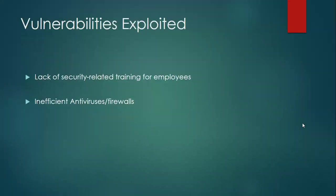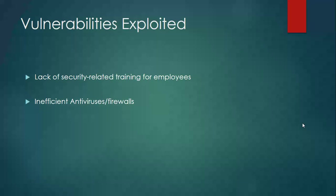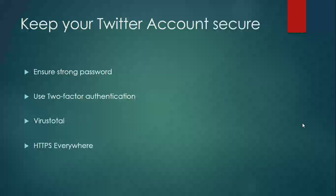Some of the vulnerabilities that might have been exploited: the first one is lack of security-related training for employees. If Twitter employees had been properly trained, they might have been more cautious toward the use of this malicious software. The second one is an inefficient antivirus or malware system — if there had been a strong firewall system, it might have prevented the installation of such software even in a high-tech security environment.